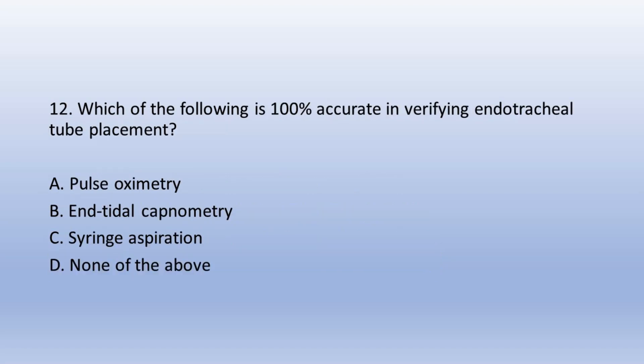Question 12. Which of the following is 100% accurate in verifying endotracheal tube placement? A. Pulse oximetry, B. End tidal capnometry, C. Syringe aspiration, D. None of the above. The answer is D. None of the above.